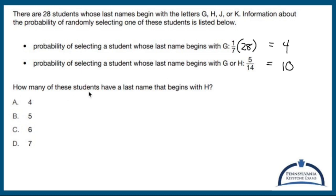The question here is how many of these students have a last name that begins with H? Well, if it's G or H and there's 10 of them, but four of them have a last name that start with G, let's get rid of that four. Let's just pretend I did that on purpose. Six people have a last name that starts with an H. The answer is C.